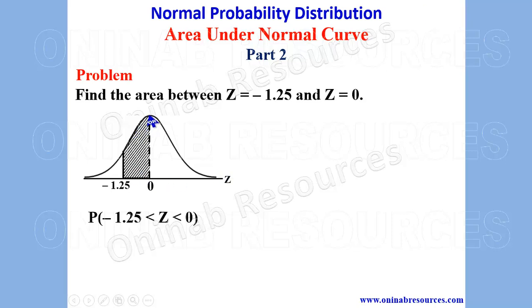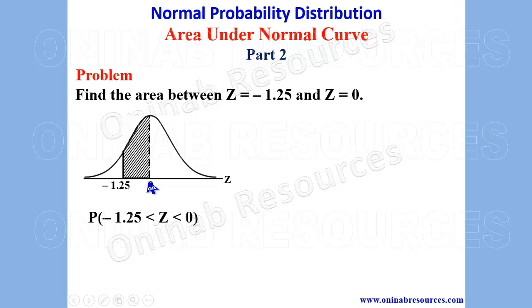Which is invariably telling us that the area between negative 1.25 and 0 is equal to the area between 0 and 1.25. We can have it as equal to P of 0 less than z less than 1.25. Since it is between 0 and 1.25,